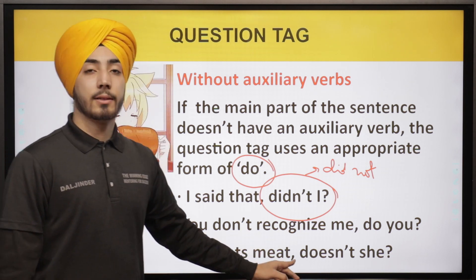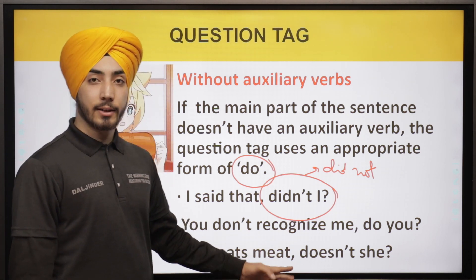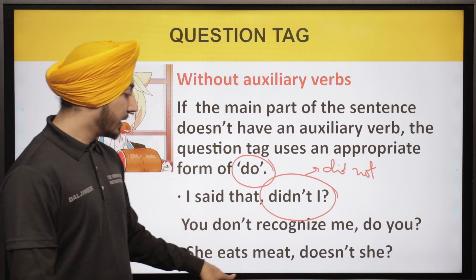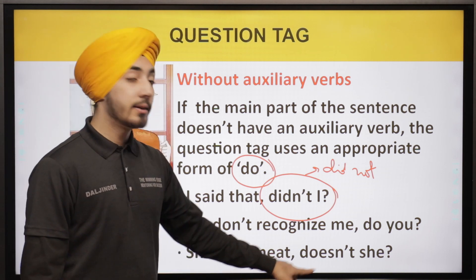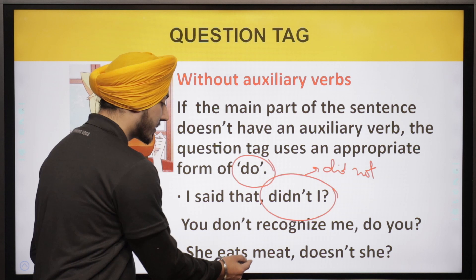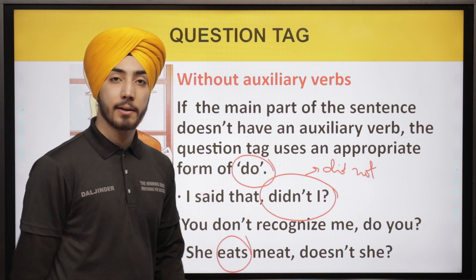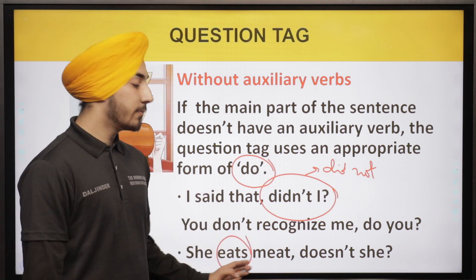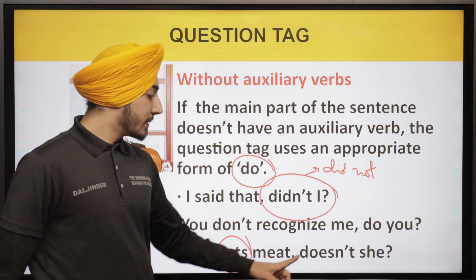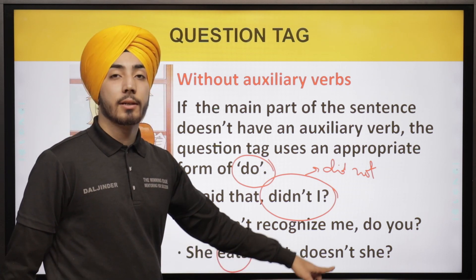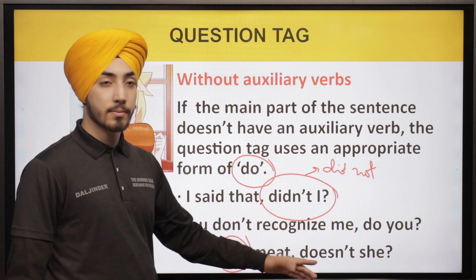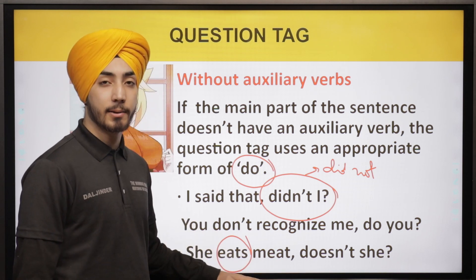Another example: 'She eats meat, doesn't she?' — because eating meat is her habit, we confirm it with the negative question tag 'doesn't she?'